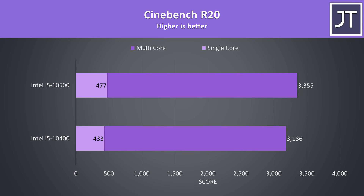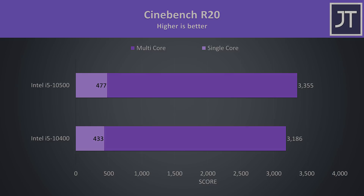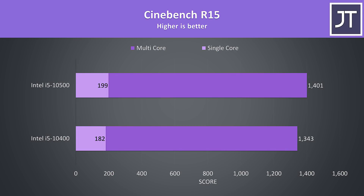Starting with Cinebench R20, the higher-clocked 10500 is at the top and the lower-clocked 10400 just below it. The more expensive 10500 was 5% faster in multicore score, however the single core score saw a larger 10% increase. I've also tested the older Cinebench R15, and the margins were quite similar, with the single core score again seeing bigger gains with the 10500 than multicore.